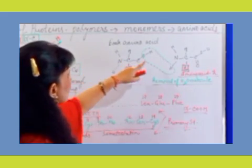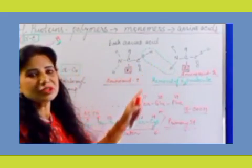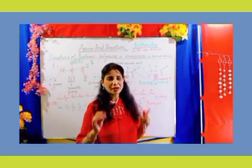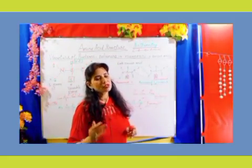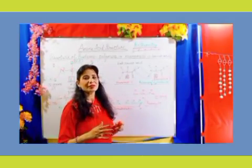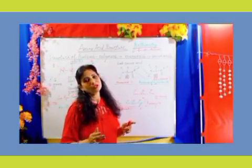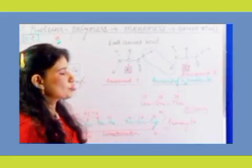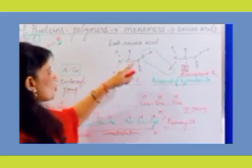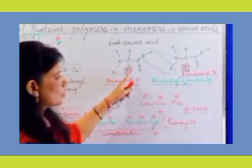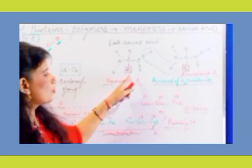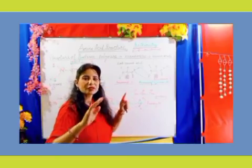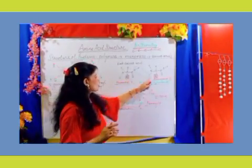The alpha amino nitrogen of one amino acid is linked with the alpha carboxylic group of another amino acid. When they link, that is called a polypeptide bond, which is simply a kind of covalent bond. You can see amino acid 1 and amino acid 2 — both have the same basic structure: an NH2 group, a COOH group, the alpha carbon, and the variable R group.